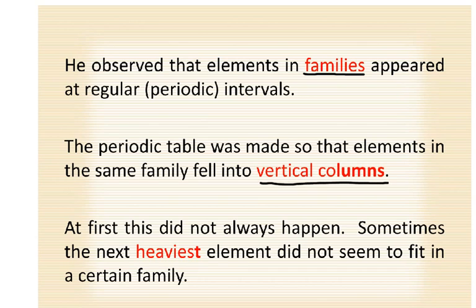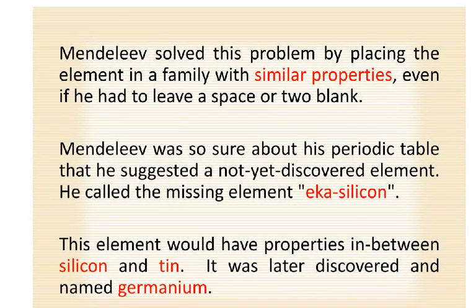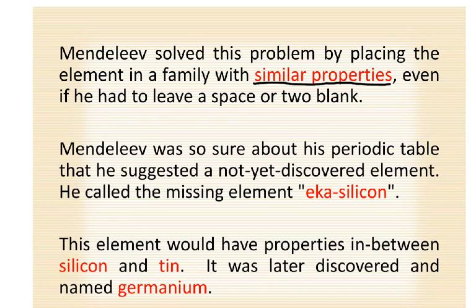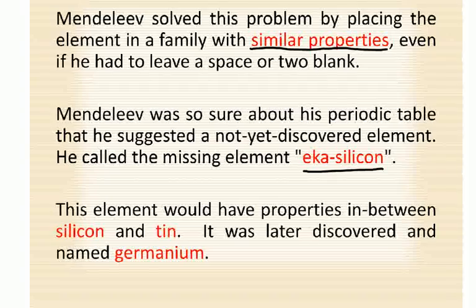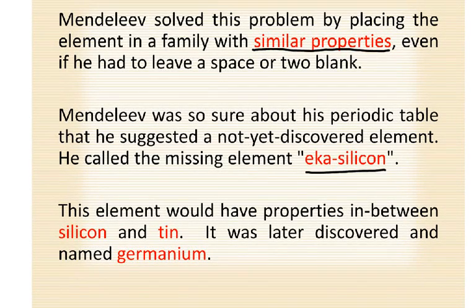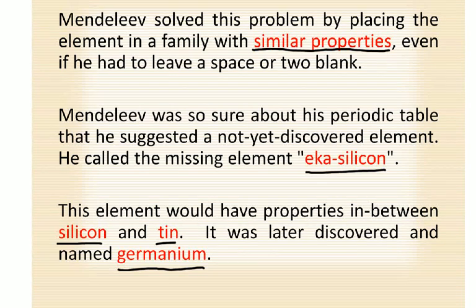At first, this did not always happen. Sometimes the next heaviest element did not seem to fit in a certain family. Mendeleev solved that problem by placing the element in a family with similar properties, even if he had to leave a space or two blank. Mendeleev was so sure about his periodic table that he suggested a not-yet-discovered element and called it eca-silicon, meaning it was sort of like silicon. This element would have properties in between silicon and tin, and it was later discovered and named germanium.